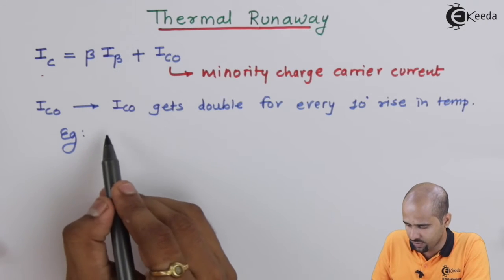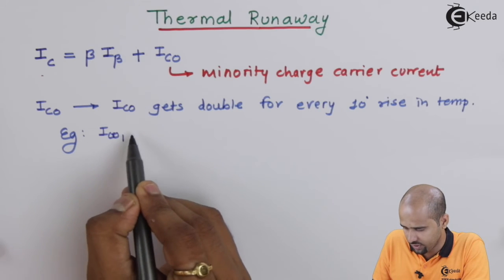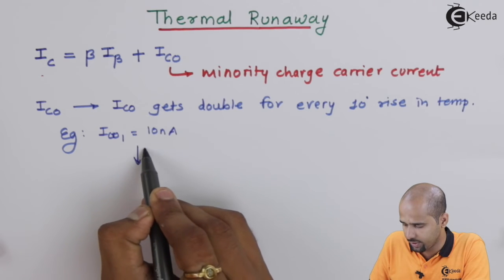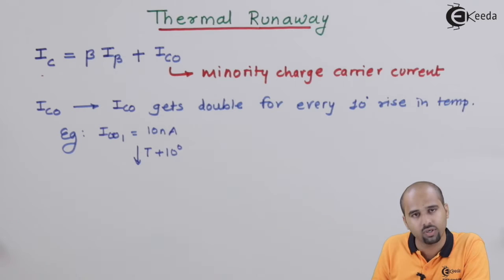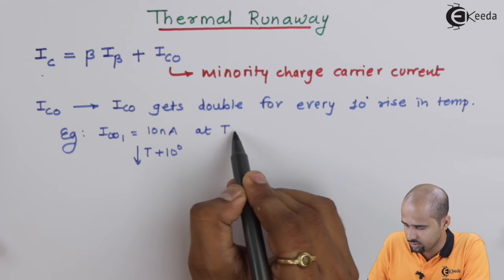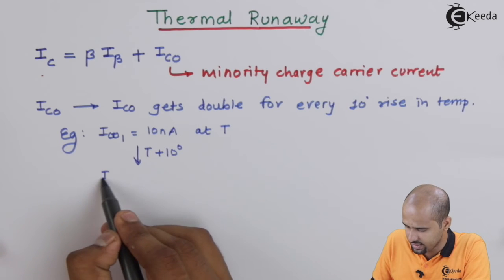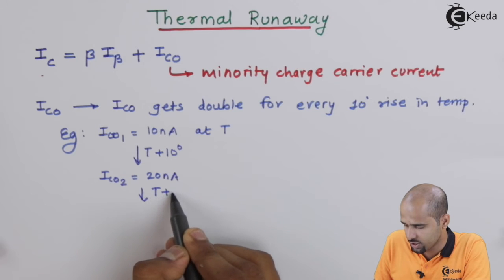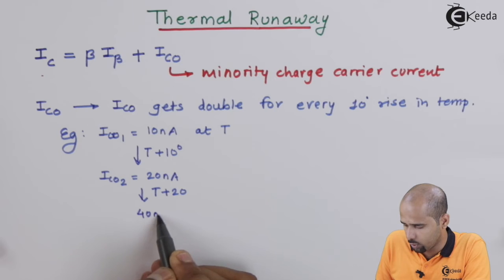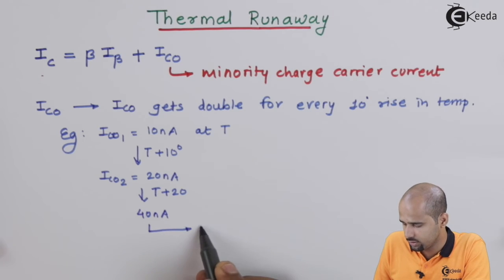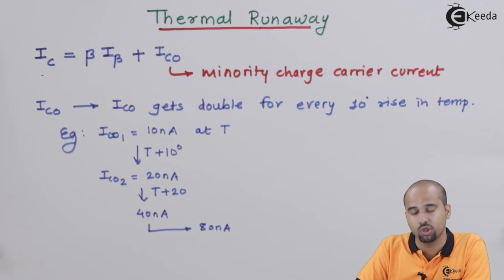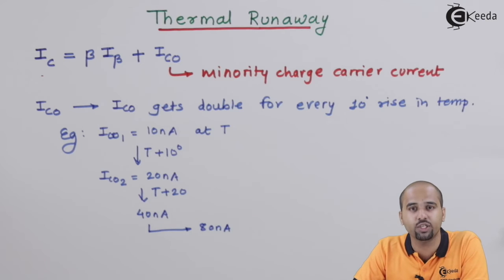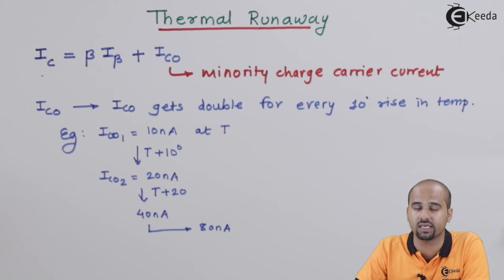For example, if Ico1 is initially 10 nanoamperes, then after a 10 degree rise in temperature (T + 10°), Ico2 becomes 20 nanoamperes. At T + 20°, it becomes 40 nanoamperes, and at T + 30° it becomes 80 nanoamperes, and so on. This is how we get an exponential increment in Ico, which in turn leads to an increase in the collector current Ic.